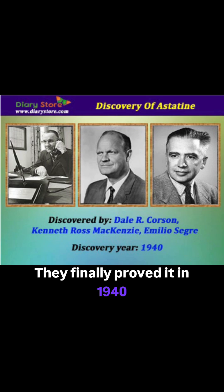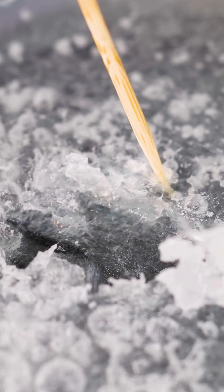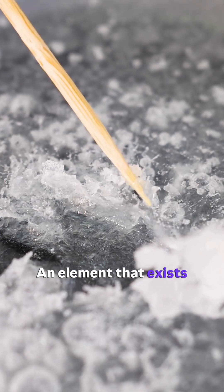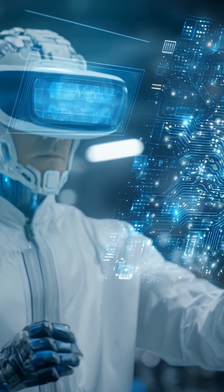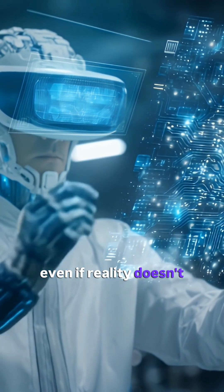They finally proved it in 1940 by creating astatine artificially—an element that exists just long enough to remind us that some things can be real even if reality doesn't want them to.